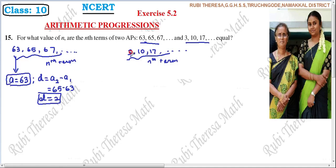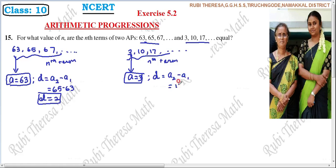For the second sequence, what is the initial term? The first term A equals 3. And what is the value of common difference D? A2 minus A1, that is 10 minus 3, which equals 7. So D equals 7.